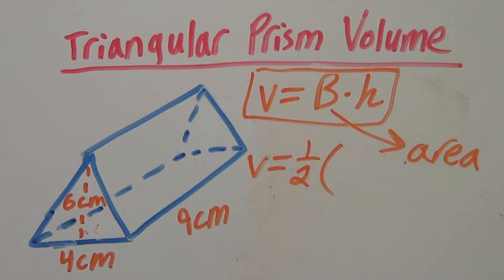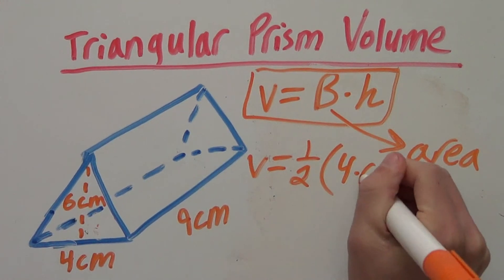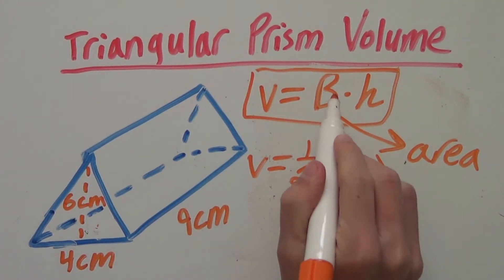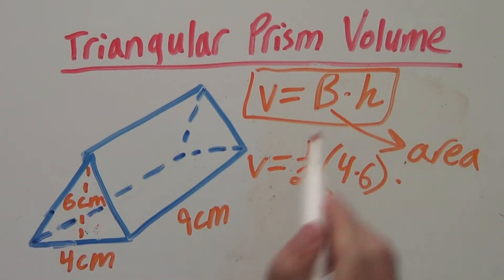So 1 half our base is 4 times our height which is 6 and then times our height of our triangular prism which is 9. And remember if we tilted this upright, that is our height since it would be going up.